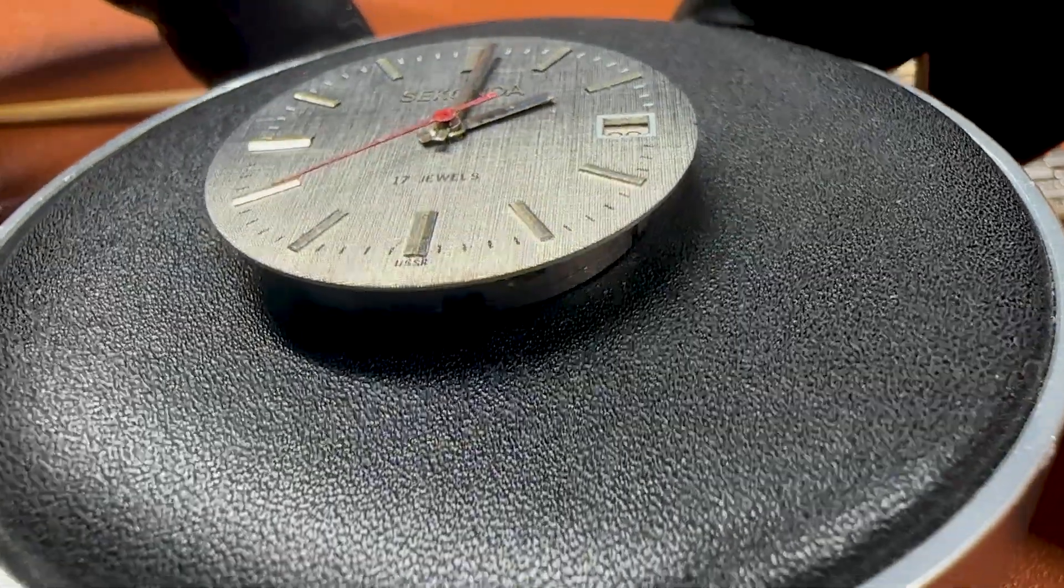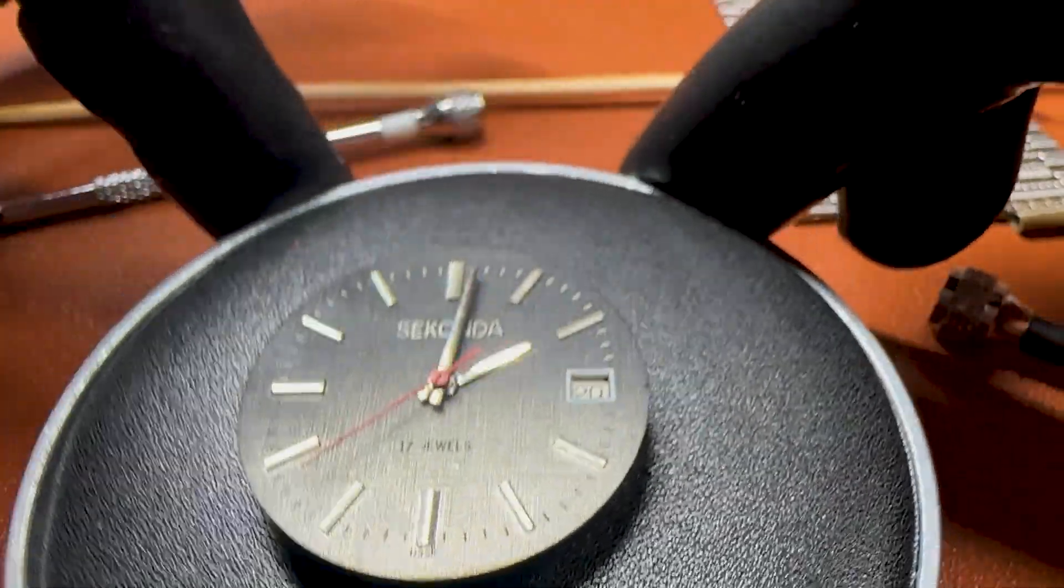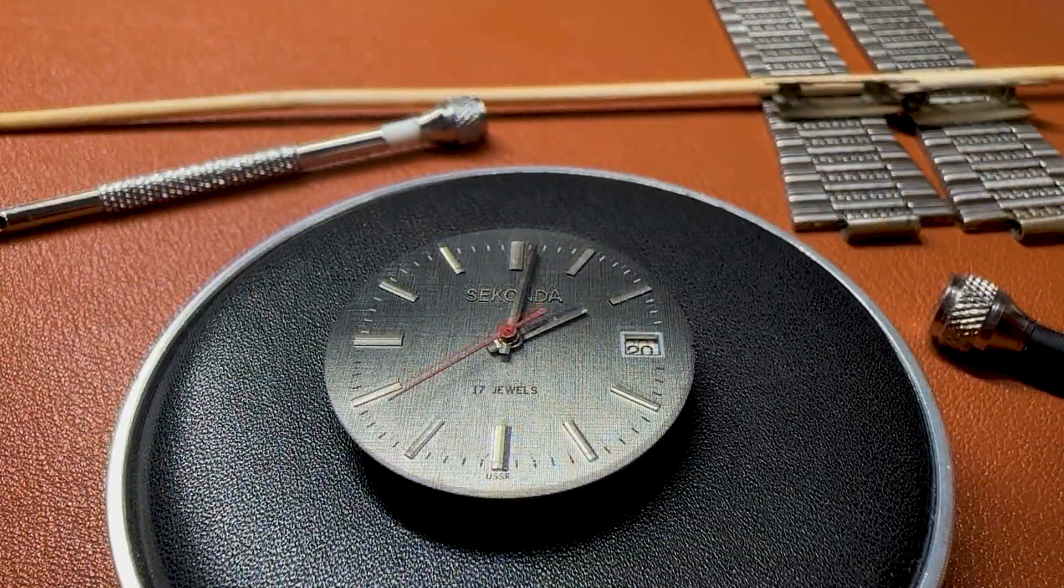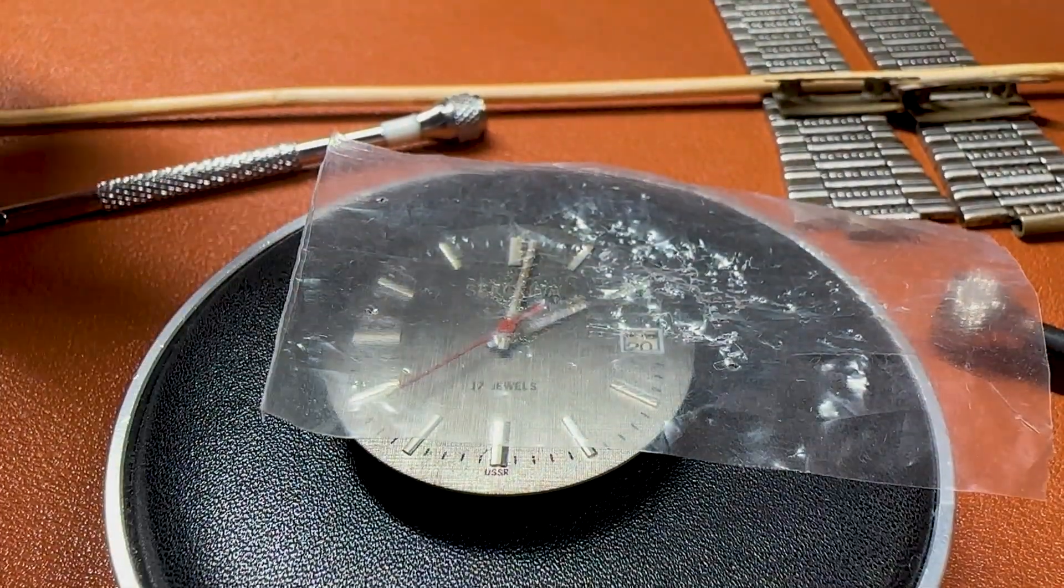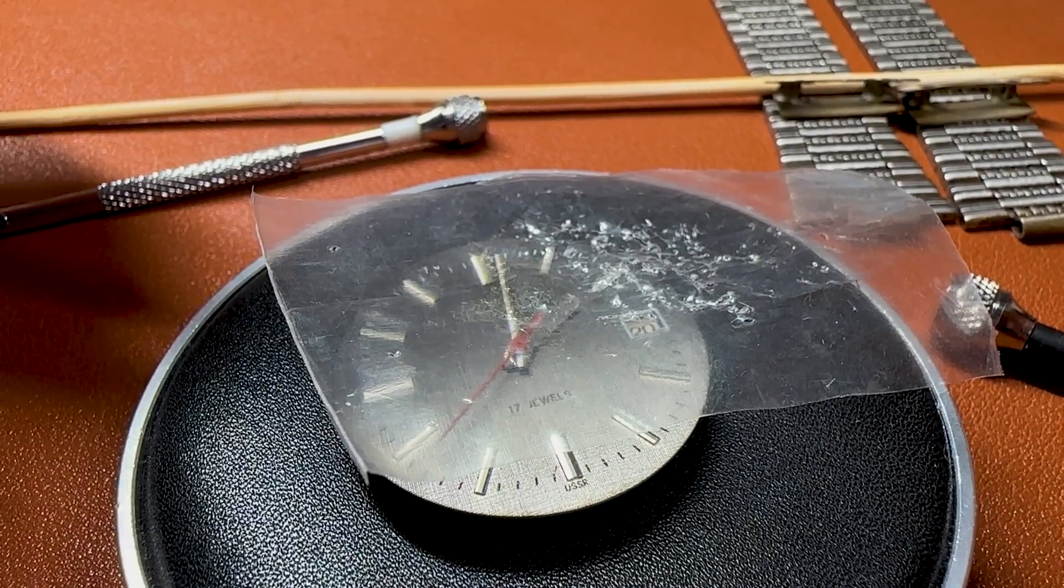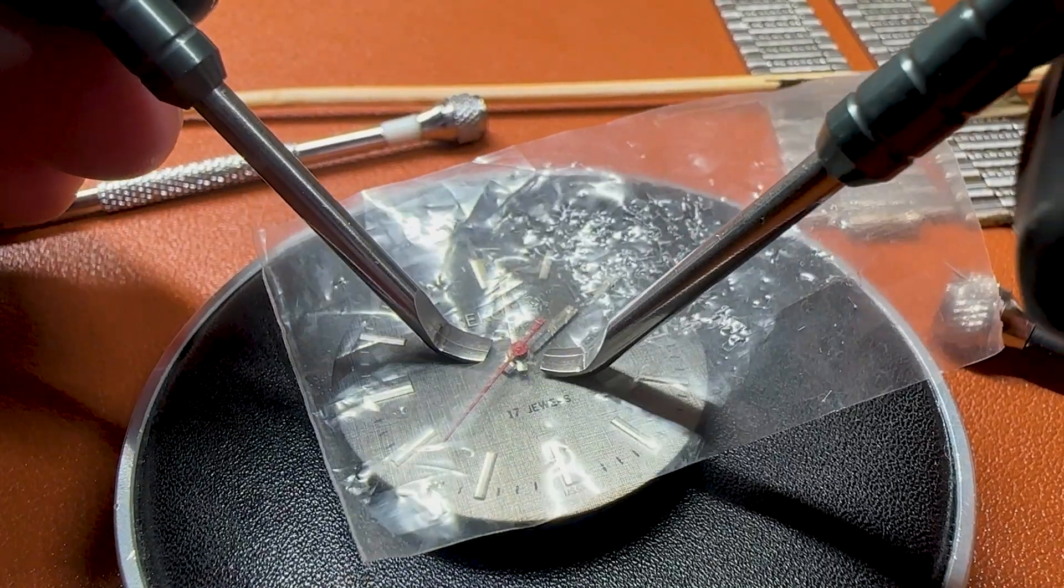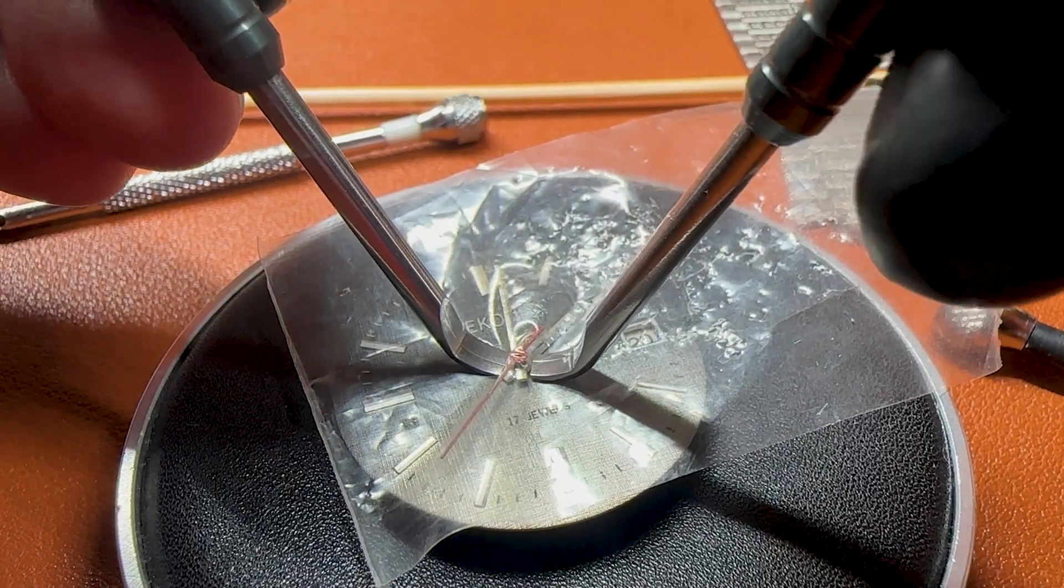The dial is in perfect condition. Let's remove the hands, let's remove the dial and start disassembling the watch. By the way I got new hands removal tools as someone on this channel suggested me.